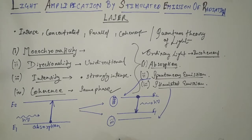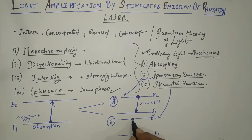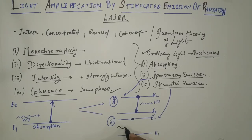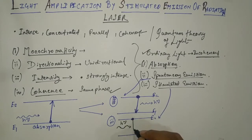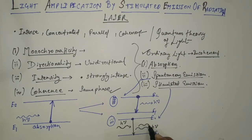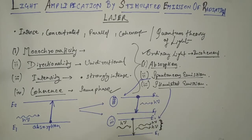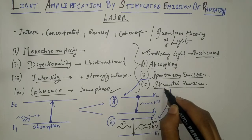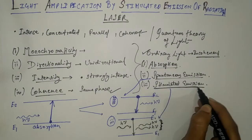Number three is stimulated emission. The atom is in the higher energy state E2. If we strike this higher energy atom with another photon having energy hν, it comes to the lower energy state E1, giving away another photon of the same frequency hν. This is the laser light we obtain, and this phenomenon is important for laser production. Laser is produced when stimulated emission takes place.